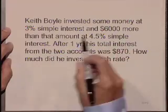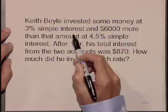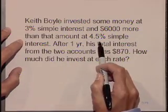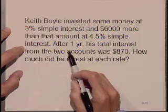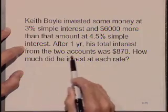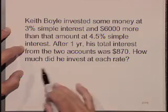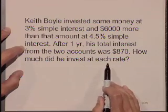Let's solve this application. Keith Boyle invested some money at 3% simple interest and $6,000 more than that amount at 4.5% simple interest. After one year, his total interest from the two accounts was $870. How much did he invest at each rate?